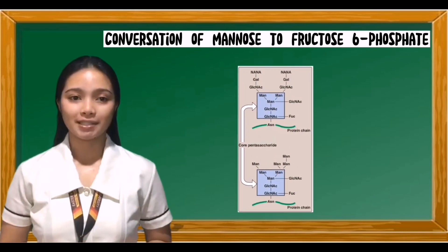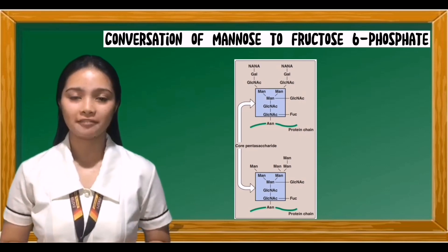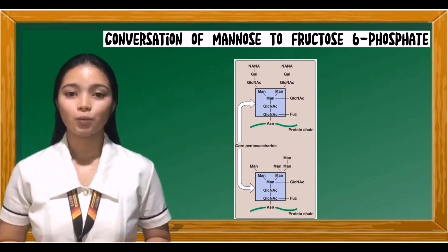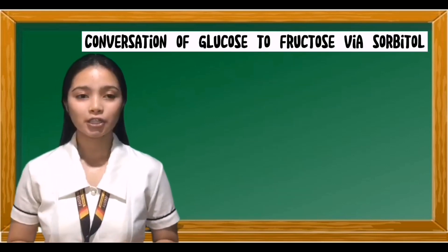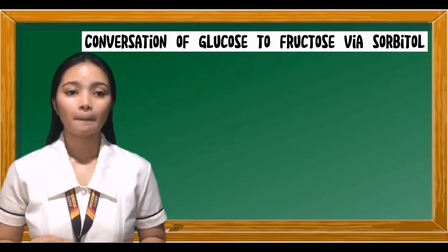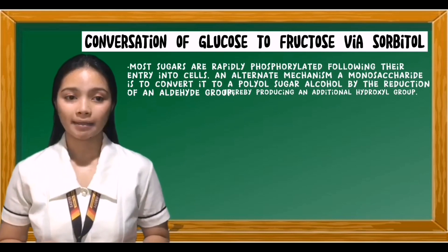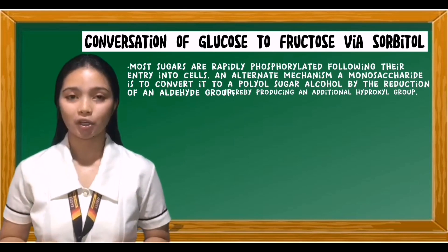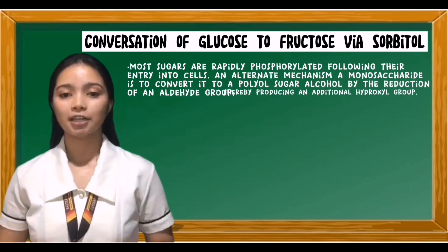Mannose, the C2 epimer of fructose, is an important component of glycoproteins. Hexokinase phosphorylates mannose, producing mannose 6-phosphate, which in turn is reversibly isomerized to fructose 6-phosphate by phosphomannose isomerase. Regarding conversion of glucose to fructose via sorbitol: most sugars are rapidly phosphorylated following their entry into cells, but an alternate mechanism for metabolizing a monosaccharide is to convert it to a polyol or sugar alcohol by the reduction of an additional hydroxyl group.